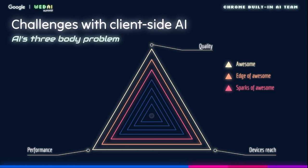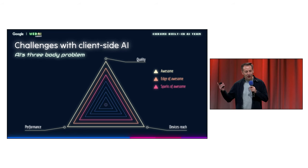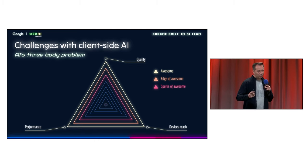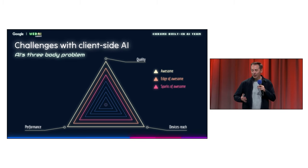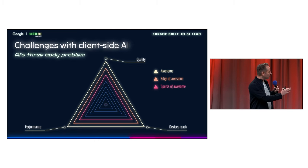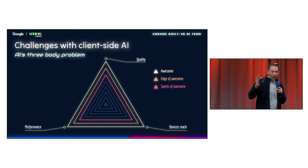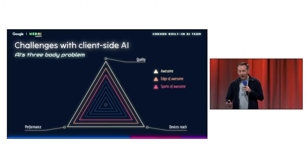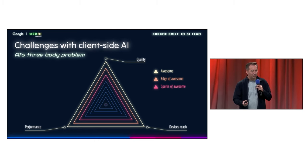Model delivery is sorted, but client-side AI still has a few laser traps to avoid. Because building the ultimate client-side AI is kind of like trying to cram a whole Neo Geo arcade into a Game Boy. We are talking quality, speed, device reach — and we want it all. But with limited hardware, we've got to find a sweet spot where it's not the super awesome thing, but it's awesome enough to be valuable, so that you don't require all users to upgrade to a fancy gaming rig.